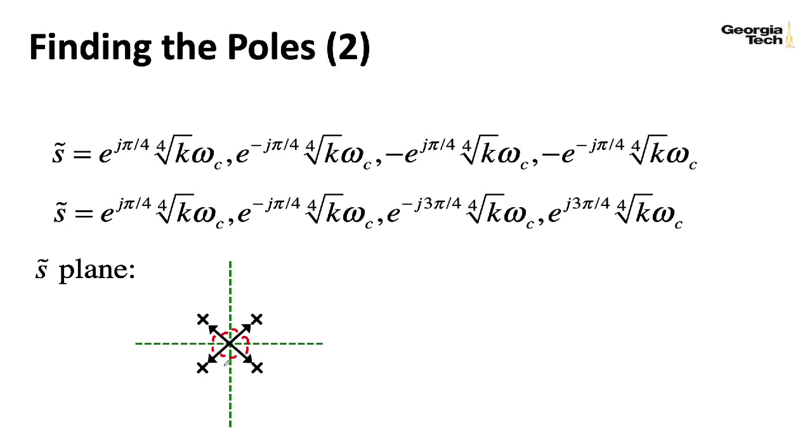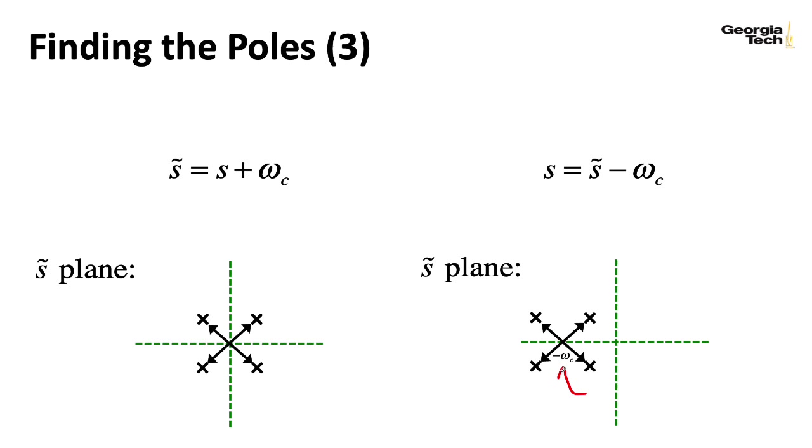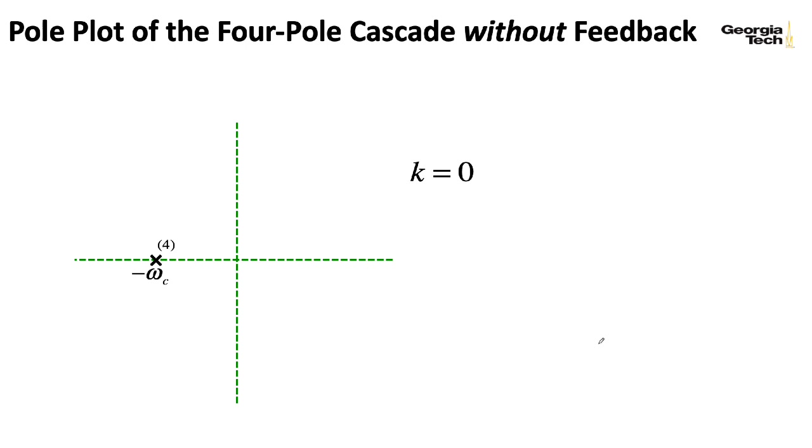Of course, this is only really at the origin for this temporary s tilde variable. Remember, that was the result of a change in variable. To get things back into s land, what I need to do is I need to shift it over to the left by omega c. So the poles are spreading out starting from this minus omega c point along the real axis of the complex plane. So at k equals zero without any feedback, I have all four poles piled on top of each other at minus omega c. That's what you would expect from this four pole cascade of individual one pole filters with a cutoff of omega c.